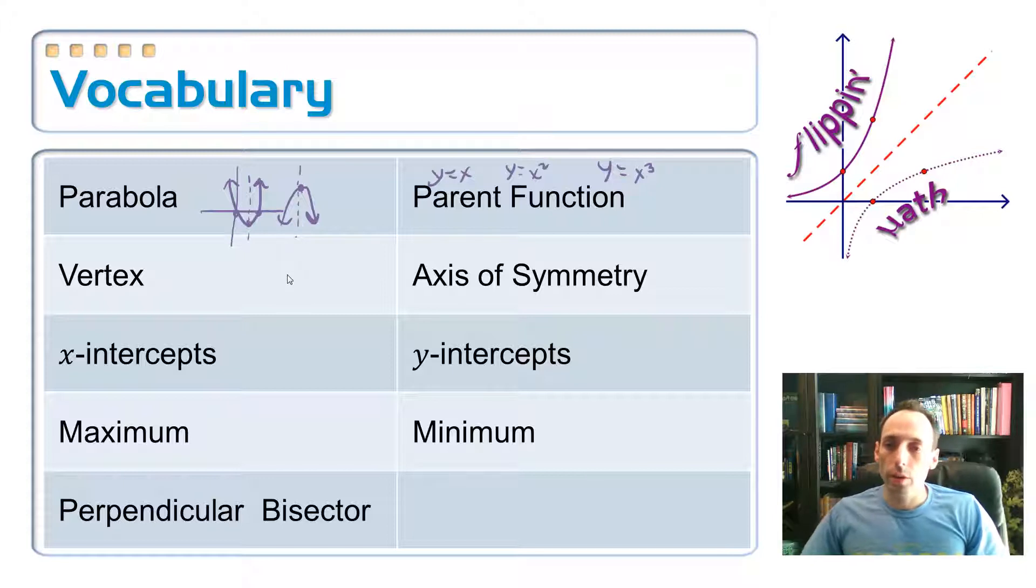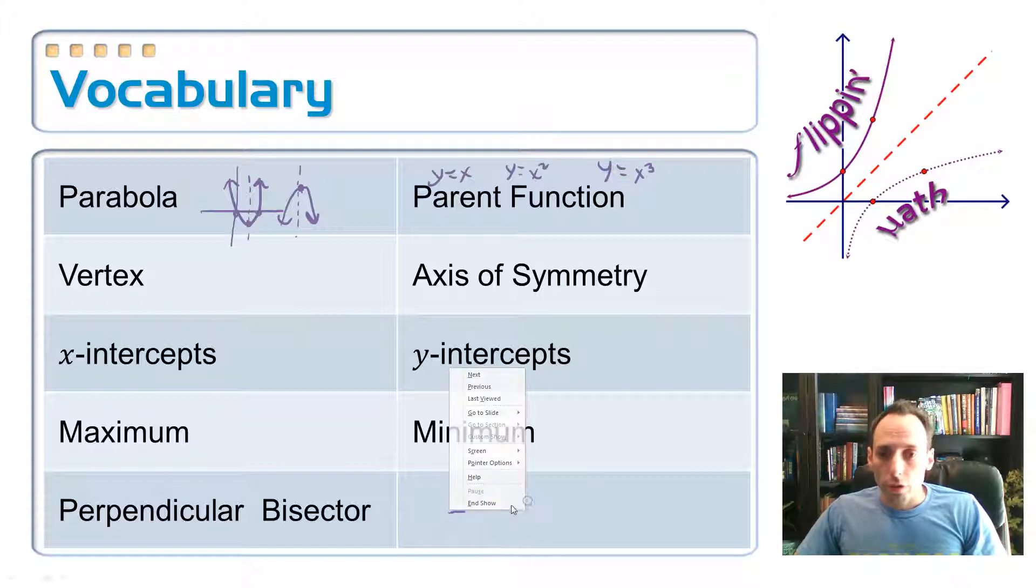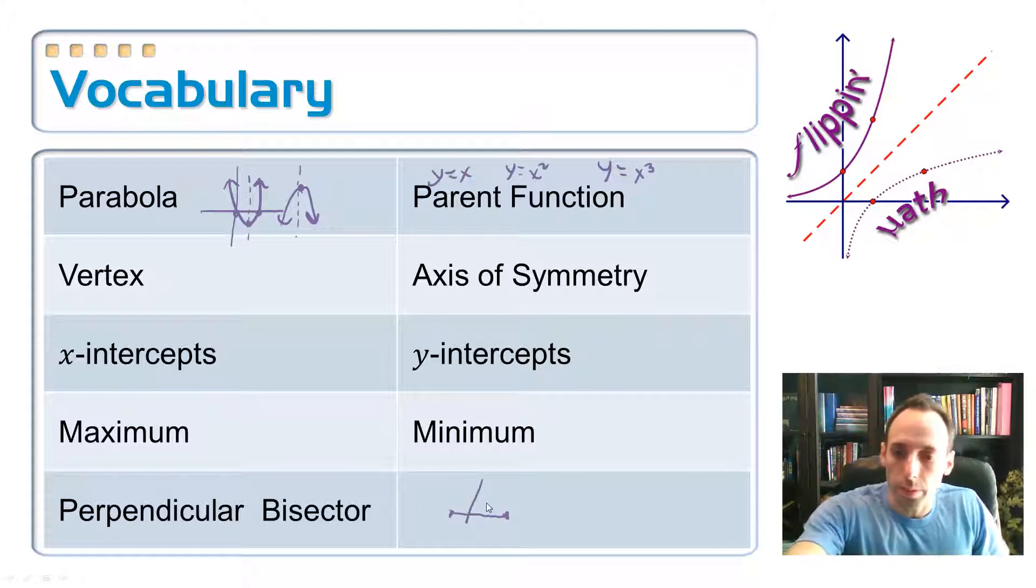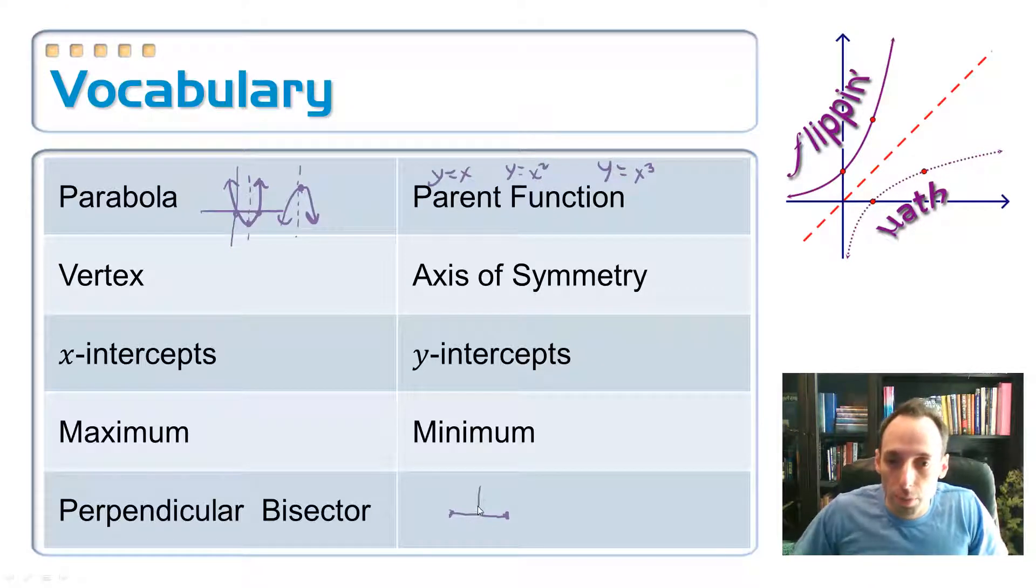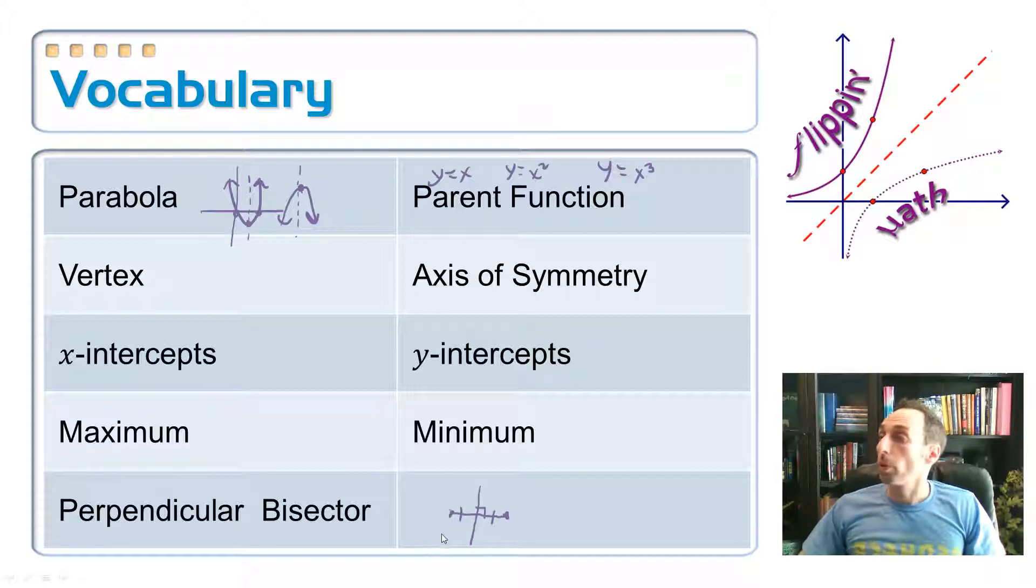And finally, perpendicular bisector. This is from geometry. If you draw yourself a segment and you want to draw a line that is perpendicular to it and goes straight through the midpoint, that's a perpendicular bisector.